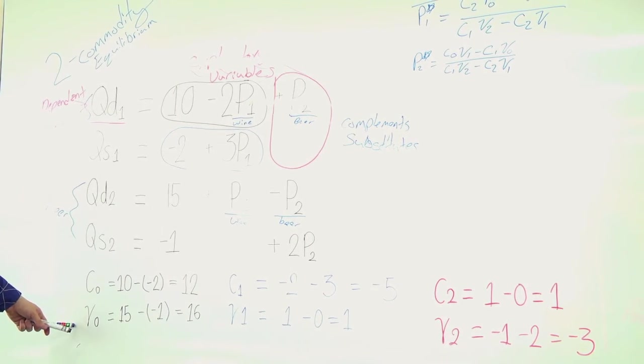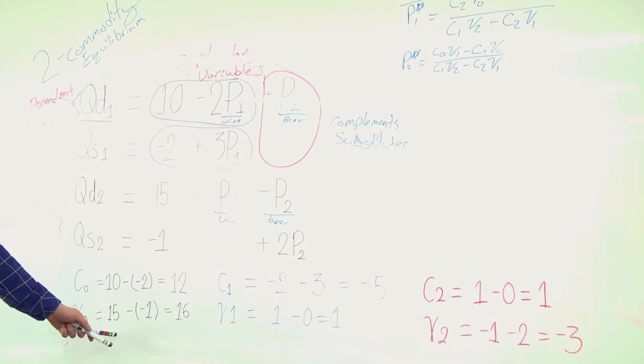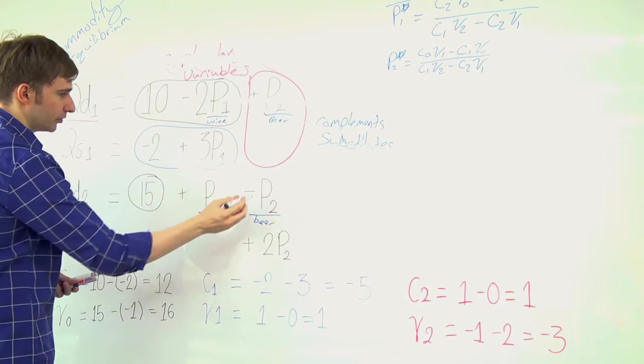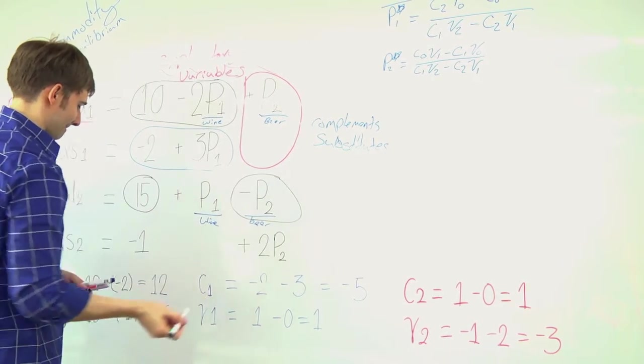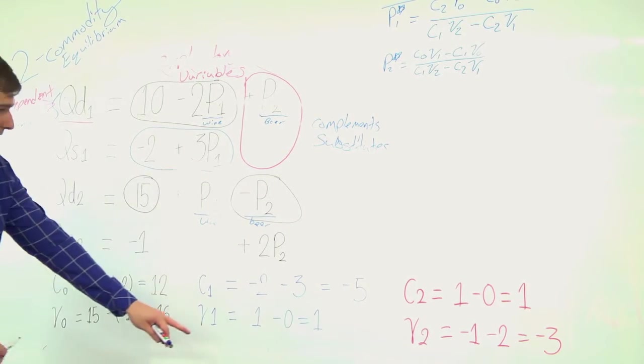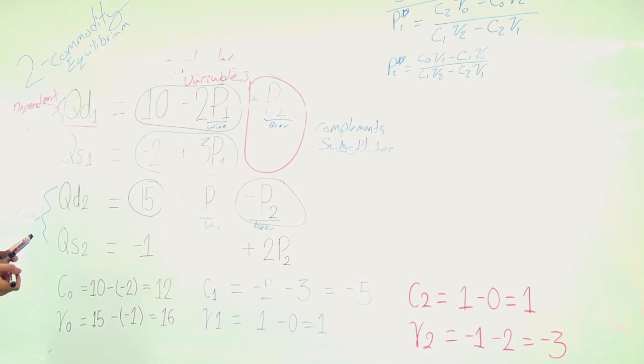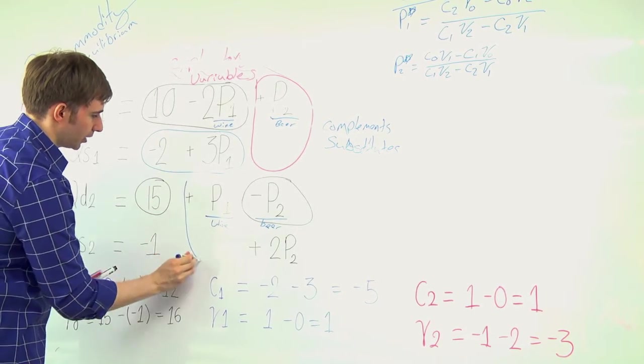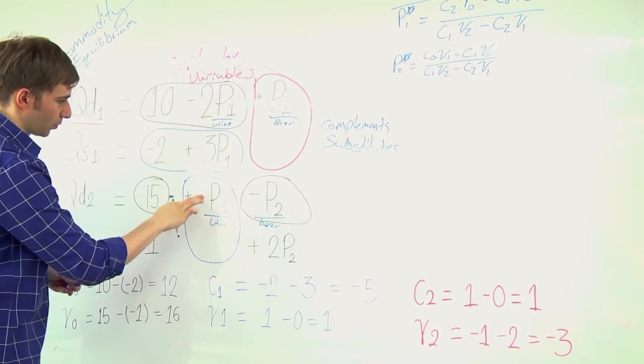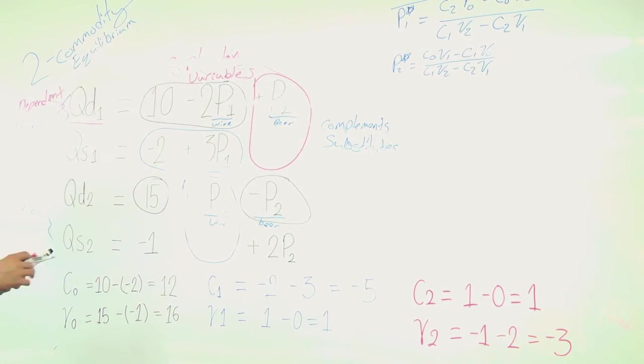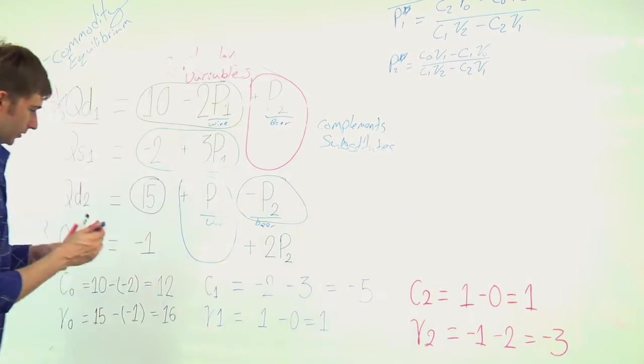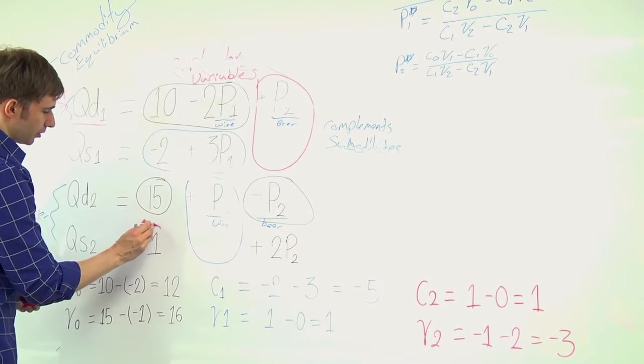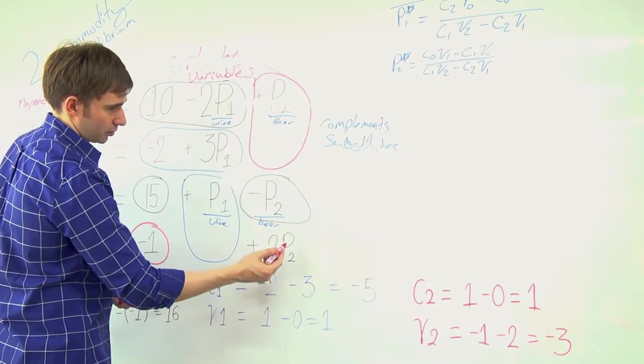For my next two equations, I'm going to take 15 minus a negative 1. So we're going to use this value here and this value here. And then I have a 1 minus 0. So we're using these two values here. 1 minus a nothing. And then lastly, I'm going to have a negative 1 minus 2. So I'm using this value minus 2.